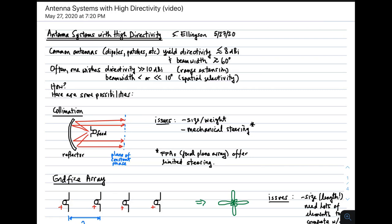Hi, welcome to a lecture on antenna systems with high directivity. We begin by noting that common antennas, such as dipoles and patches, yield directivity which is relatively small, typically less than about 8 dBi or so. Correspondingly, beam widths are relatively large, about 60 degrees. They spray energy on transmit over wide angular spans.